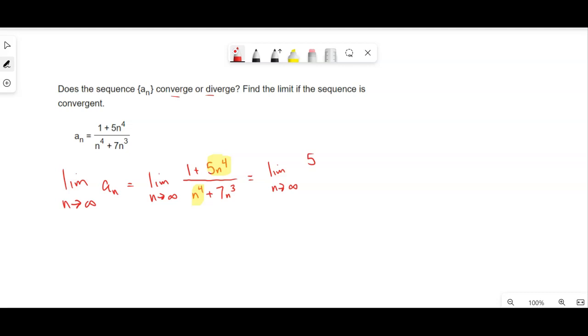So this becomes just five n to the fourth over n to the fourth. That's what we call domination of a polynomial. A polynomial is dominated by the leading term.